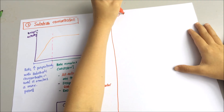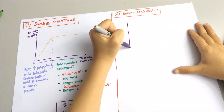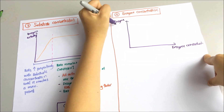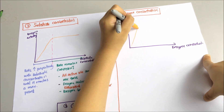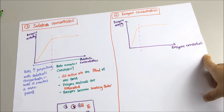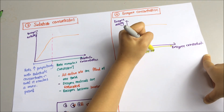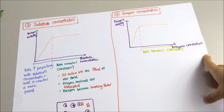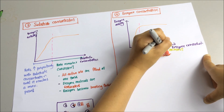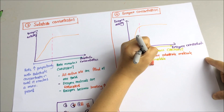Now let's look at the effect of enzyme concentration on the rate of reaction. The graph will look almost the same as the previous one. As the concentration of enzyme increases, the rate of reaction increases, because there are more chances of enzyme-substrate collisions. Until a maximum point, beyond that the rate remains constant, because there are no more substrate molecules available — the substrate concentration has now become the limiting factor.